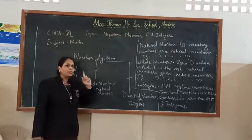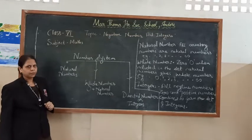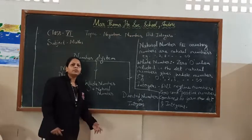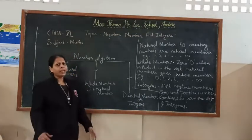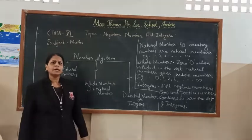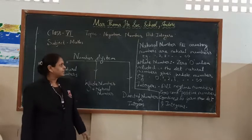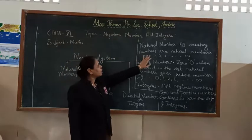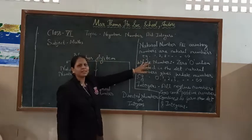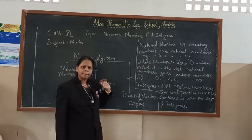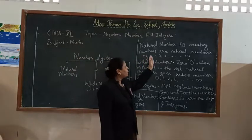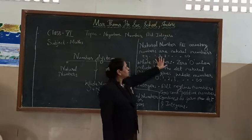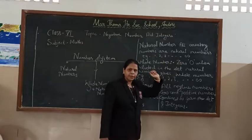How can we define natural numbers? Whenever we ask you to think about numbers, whatever numbers are counting in your mind — all counting numbers — are known as natural numbers. The examples of natural numbers are 1, 2, 3, and so on up to 18 and beyond.